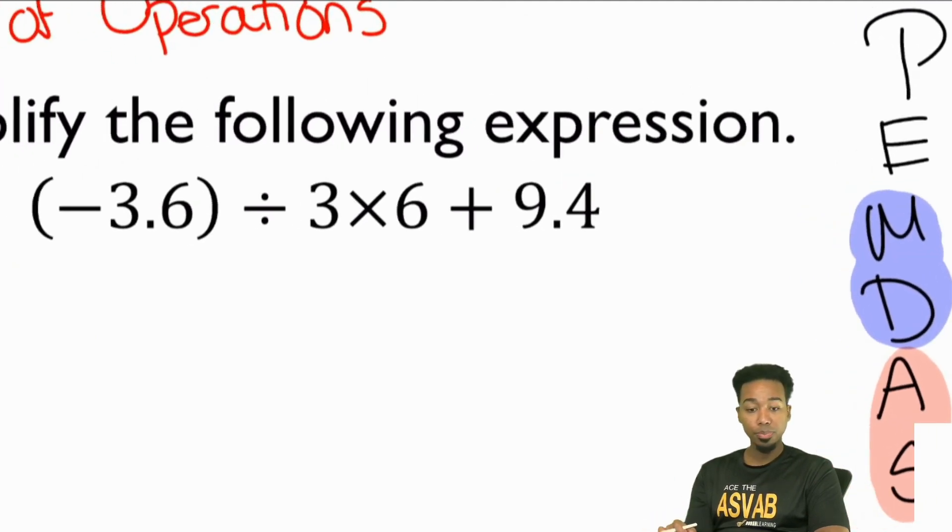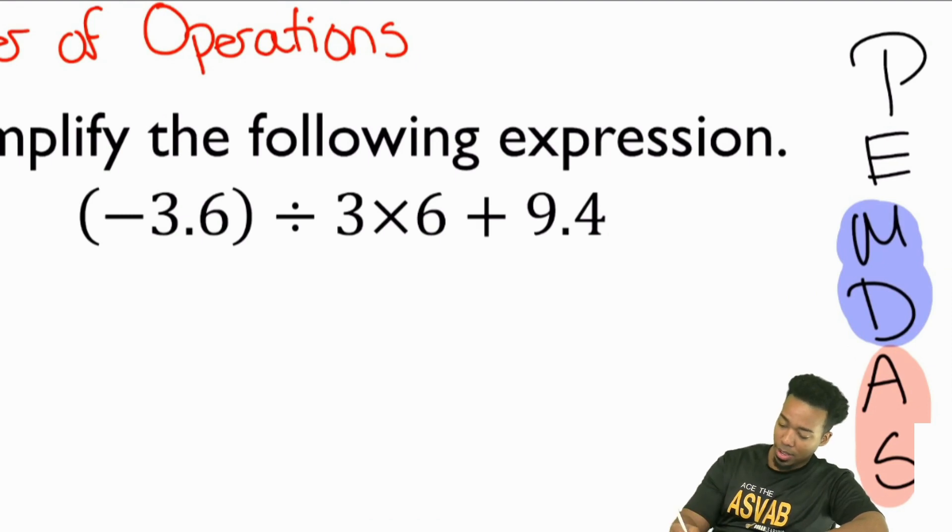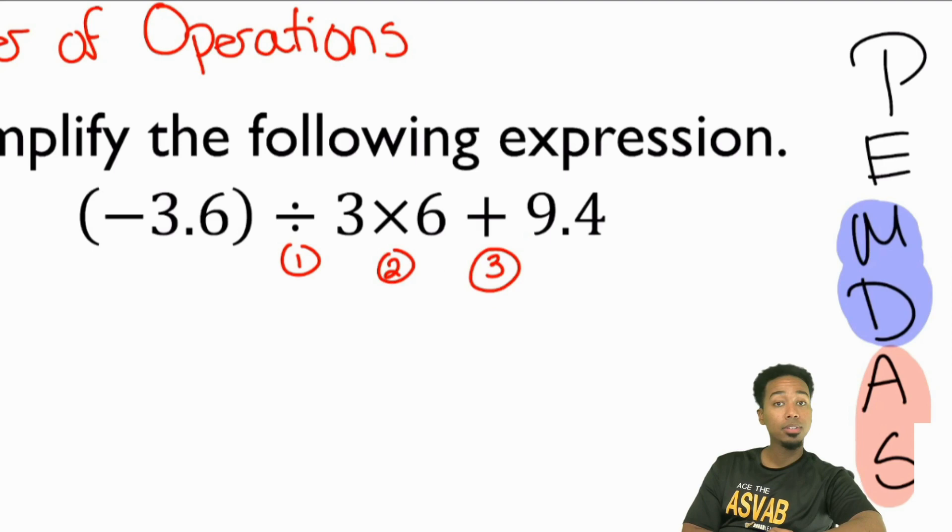Because when we take a look, the actual process is very straightforward. I observe division, multiplication, addition. So, the first thing that we're going to do, number one right here. Then number two. Then we're going to add. Because multiplication, division, it's what comes first. And in that order. And then we add. And we're done.